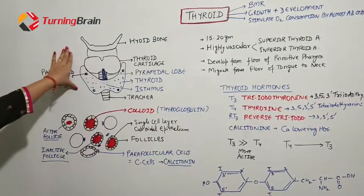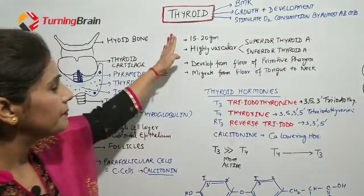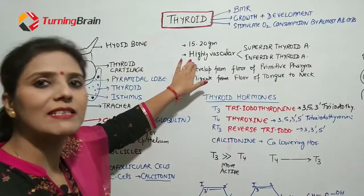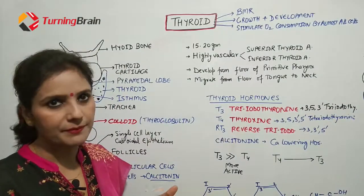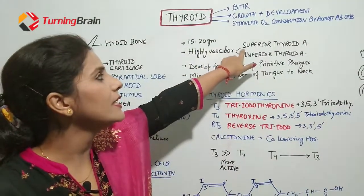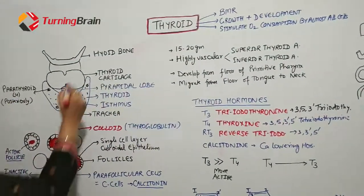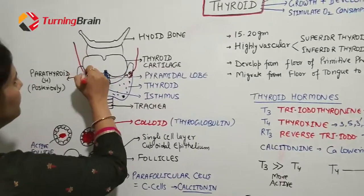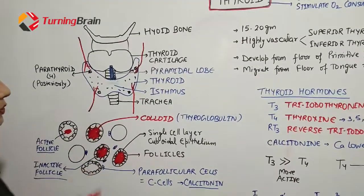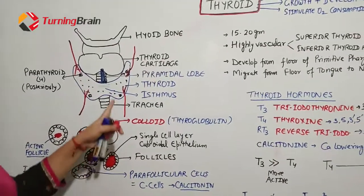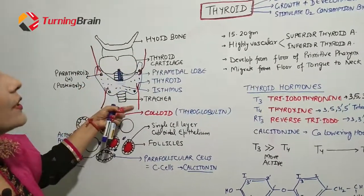The weight of the thyroid gland is 15 to 20 grams. This gland is highly vascular — its blood supply per gram of weight is very high. The blood supply comes from the superior thyroid artery, which supplies both sides from above, and the inferior thyroid artery, which supplies the lower portion from below.